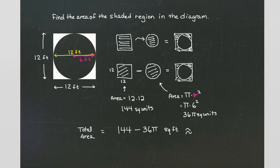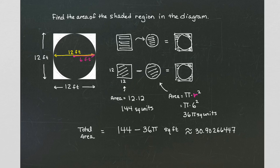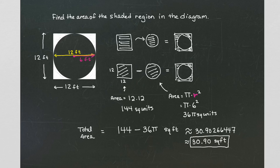Approximately, what is that? Pull out your calculator and type in 144 minus 36 times pi, and you should get approximately 30.90266447. So if we round to the nearest hundredth, that's giving us approximately 30.90 square feet. If you're asked to round to the nearest tenth, it would be 30.9. If you're asked to round to the nearest hundredth, it would be 30.90. The exact answer is 144 minus 36 pi, and the approximation is 30.90 rounded to the nearest hundredth.